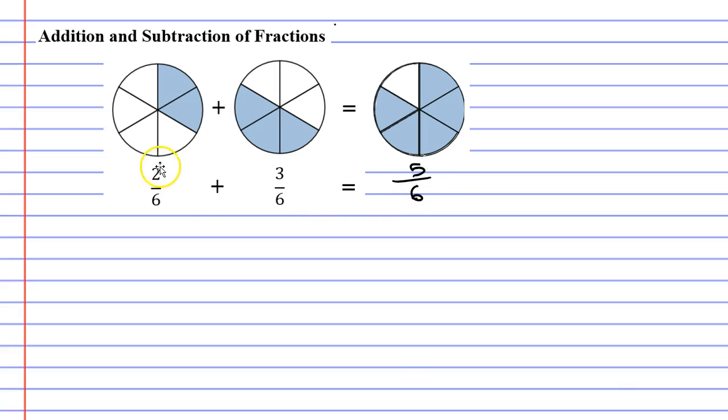Now let's look at the numerators. The numerators were 2 and 3 and our solution had a numerator of 5. 2 plus 3 is 5, so we just added up the numerators and we kept the denominator the same.